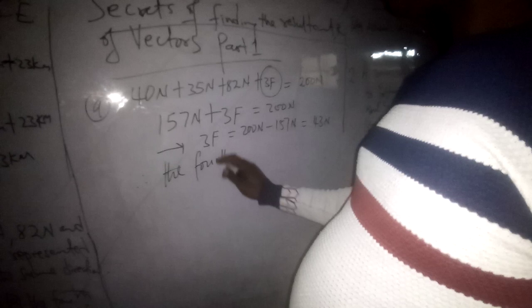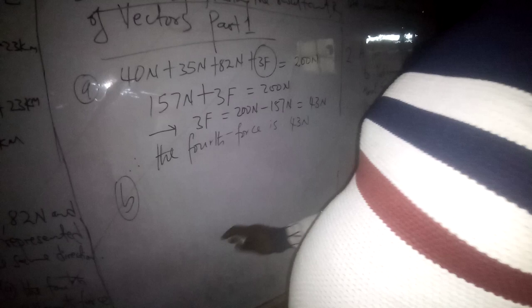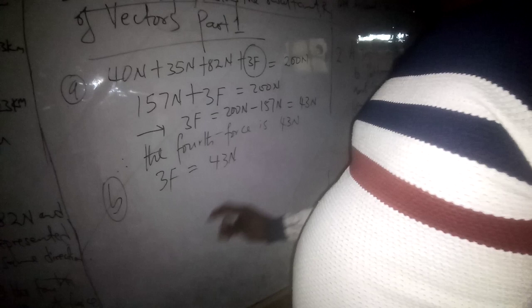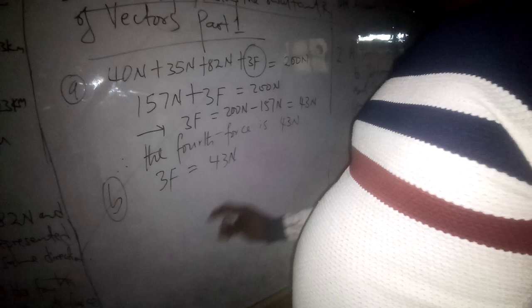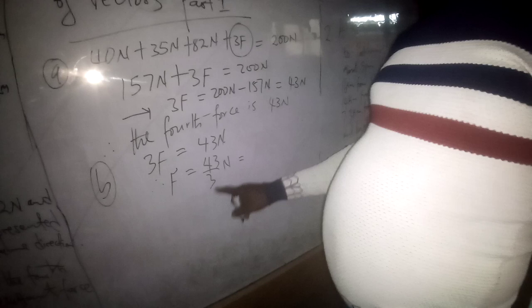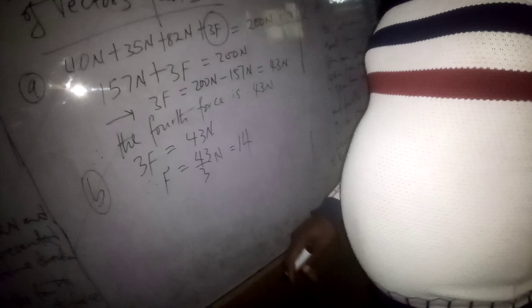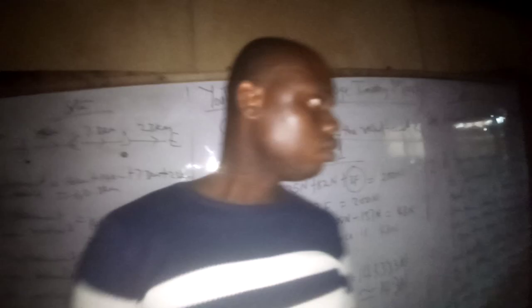For part B: since 3F = 43 N, divide both sides by 3 to get F = 43/3. The highest multiple of 3 inside 43 is 42, so 42 ÷ 3 = 14, with remainder 1, giving 0.333... Therefore F ≈ 14.3 N. This confirms: when vectors are in the same direction, simply add them to get the resultant or effective vector.